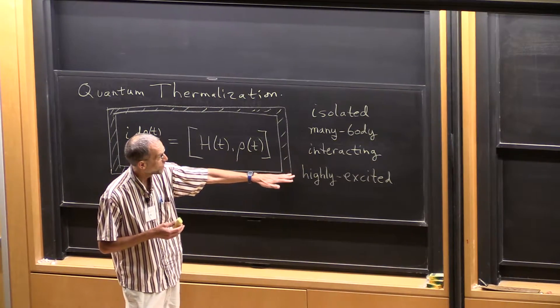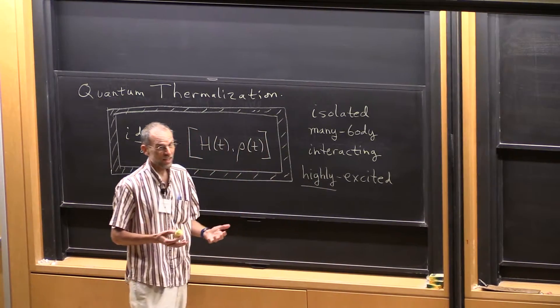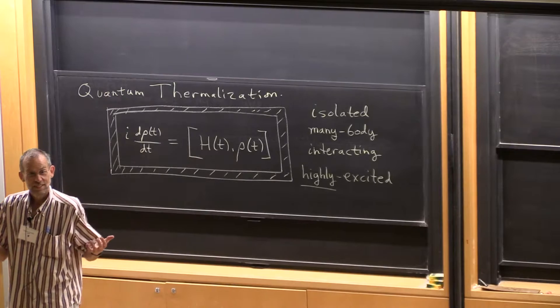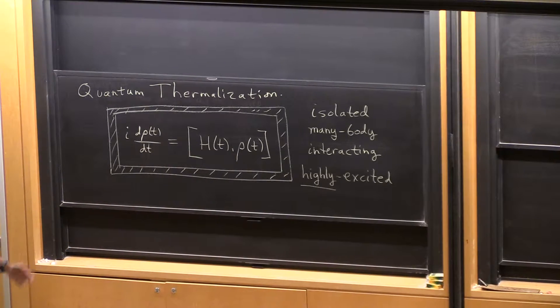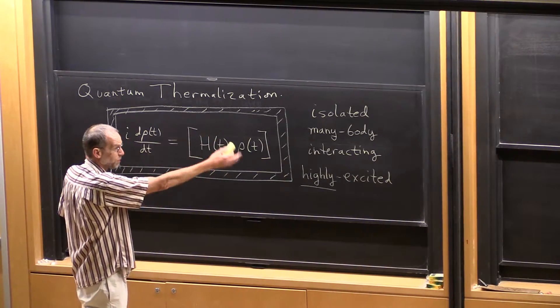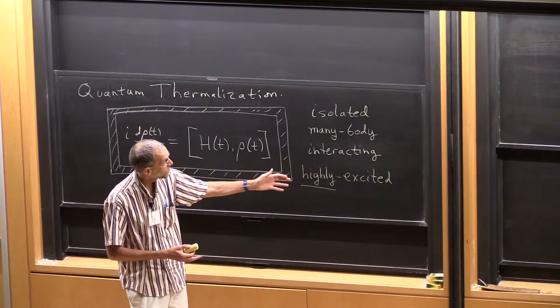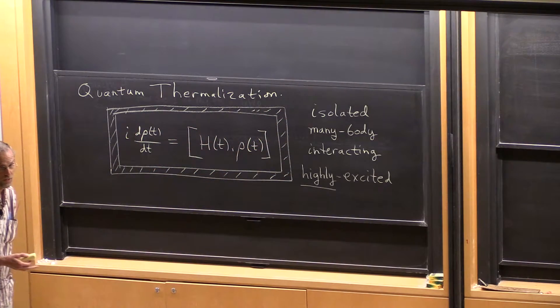And it's highly excited. By highly excited I mean very highly, not the ground state plus a few excitations. An extensive number of excitations. We have a system which is big, many degrees of freedom, and a number of excitations in proportion to the number of degrees of freedom in the system.